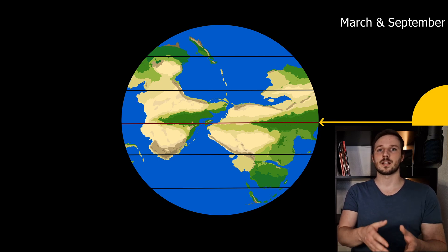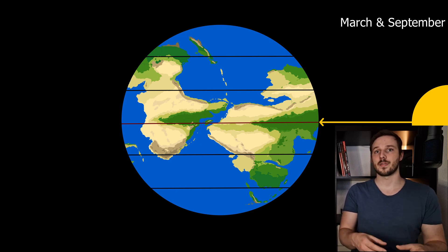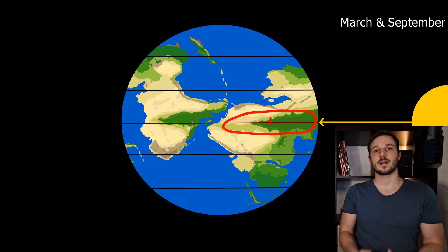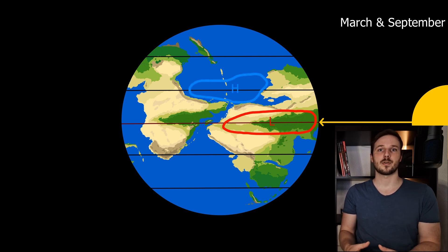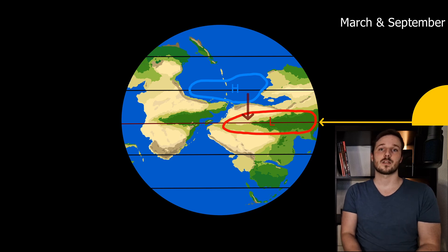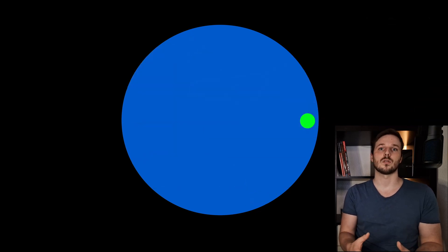As the sun rays hit the earth during March and September at the equator with the highest power, we can expect a very extreme low pressure area at the equator. And as water cools or heats slower than the landmass, we can expect a high pressure area within the water around the 30 degree latitude. There are reasons why they are at the 30 degree latitude but we'll learn this later. Now the air tries to get from the high pressure area to the low pressure area, and what happens then is called the Coriolis effect — and that is what we look at next.